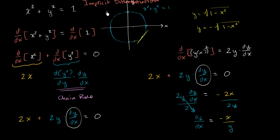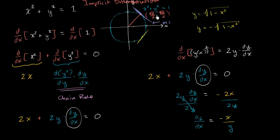If we wanted to find the derivative at a specific point — say this point right over here — if this was a 45-degree angle, this would be the point (√2/2, √2/2). What is the slope of the tangent line there? We figured it out: it's going to be negative x over y. So the slope is equal to negative √2/2 over √2/2, which is equal to negative 1. And that looks just about right.